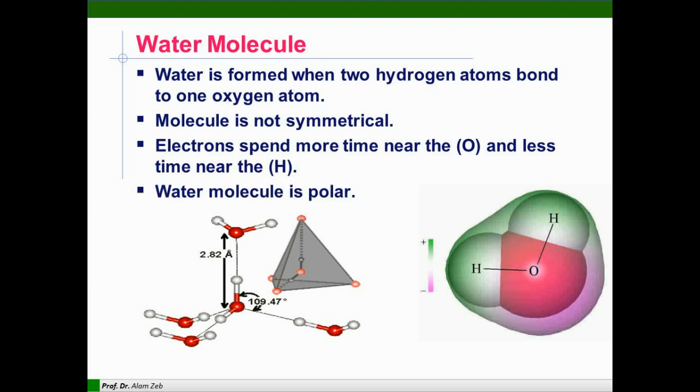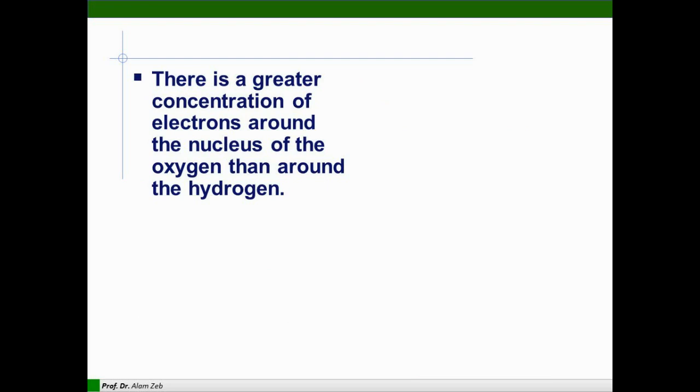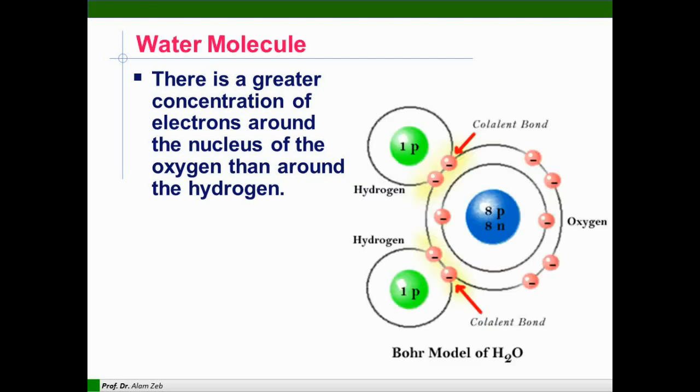You can see here from the different colors the distribution of electrons. These water molecules are held together by hydrogen bonds between oxygen atoms and hydrogen atoms. There is a greater concentration of electrons around the nucleus of oxygen than around the hydrogen atom.